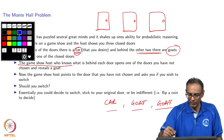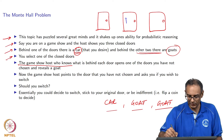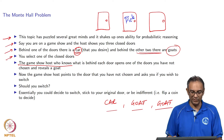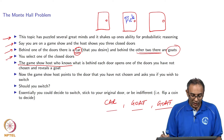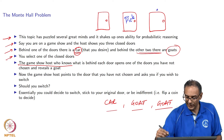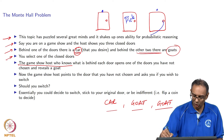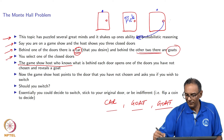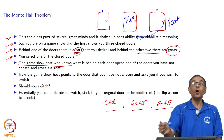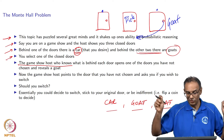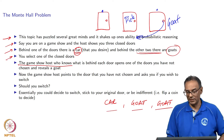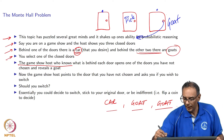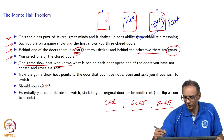Let us say you pick the second door. You could have picked the first or the third. Now, the game show host, who knows what is behind each door, picks one of the other two doors, opens it, and reveals a goat. The person knows what is behind each door and decides to open one of those doors. For sure, one of the doors has a goat - he opens the door and reveals the goat.